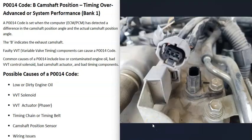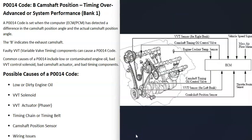The next cause is a bad camshaft position sensor. If the camshaft position sensor on bank one, camshaft B has gone bad, it may be reporting incorrect information to the computer. Usually when a camshaft position sensor fails, you'll also get other related codes, but it's still on the list of possible causes.